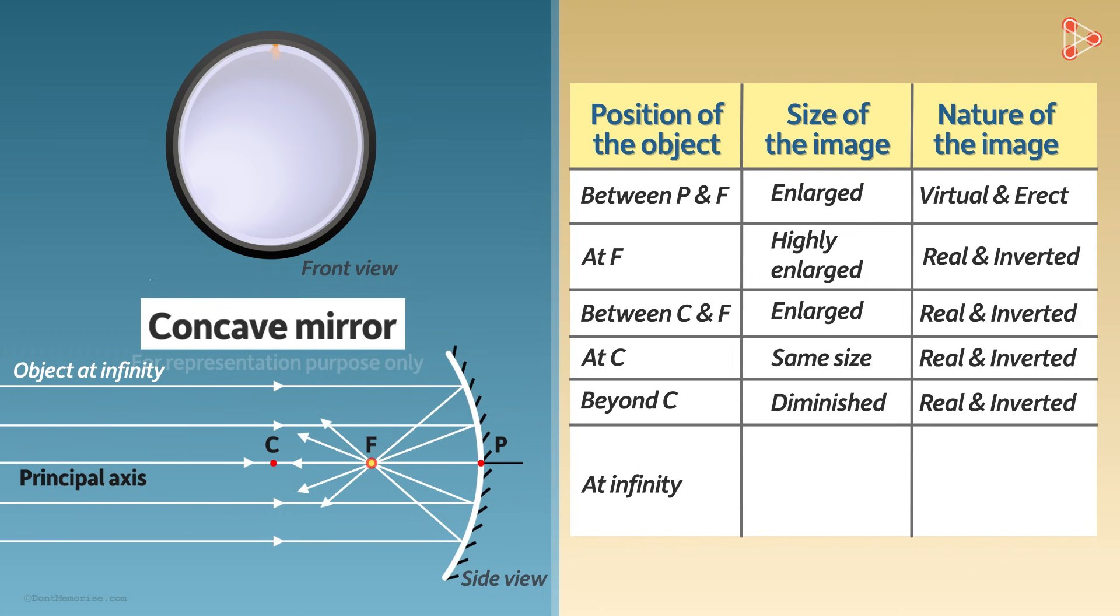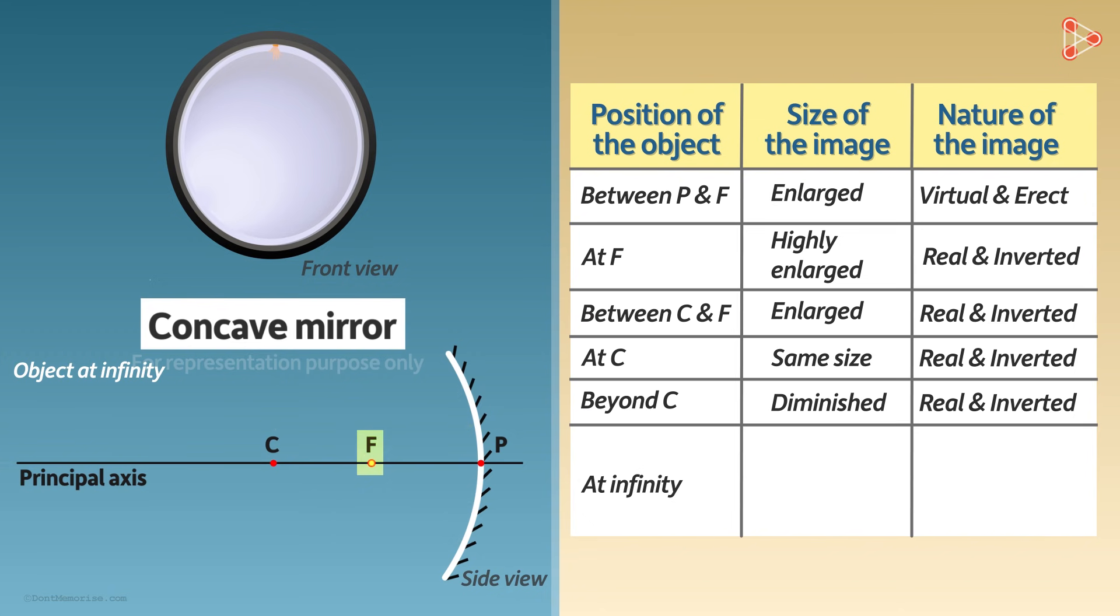And the image of that infinitely far away object will be formed at this point. Yes, this is a point size image. It's a highly diminished image and it's also a real image.